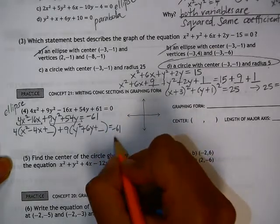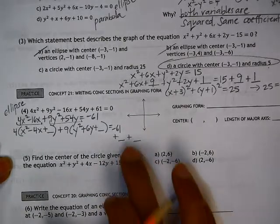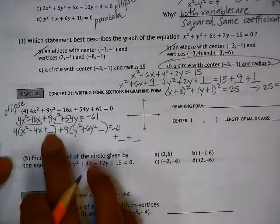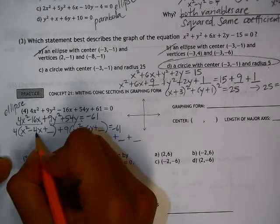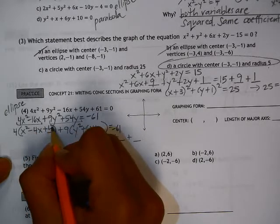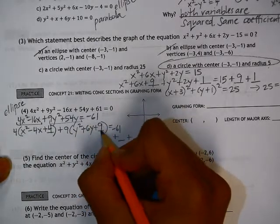So on the right side of the equation, we need to add two numbers, which we can determine after we add the numbers that complete the square. So here, negative 4 divided by 2 is negative 2. Negative 2 squared is 4. For the y's, 6 divided by 2 is 3. 3 squared is 9.